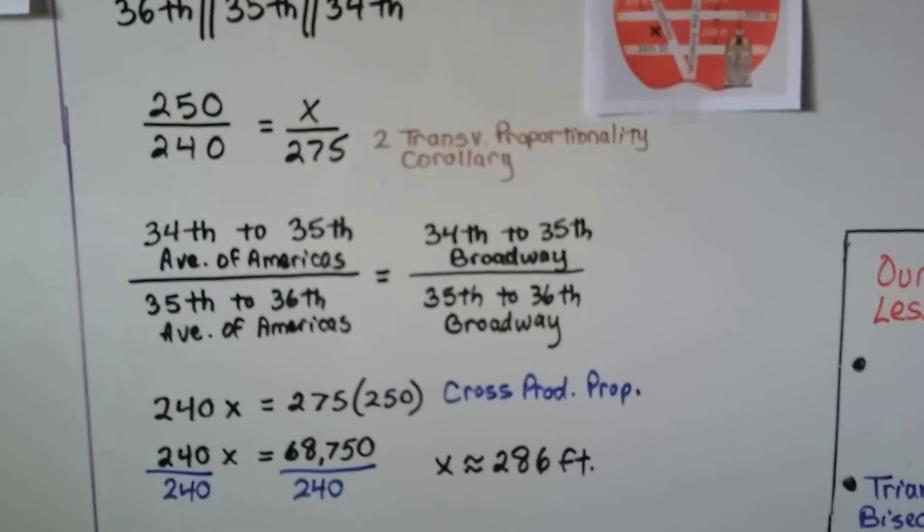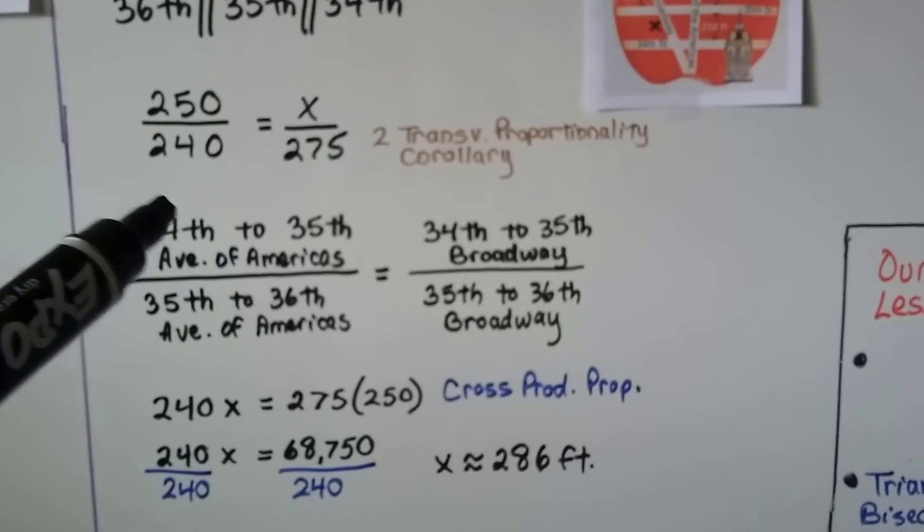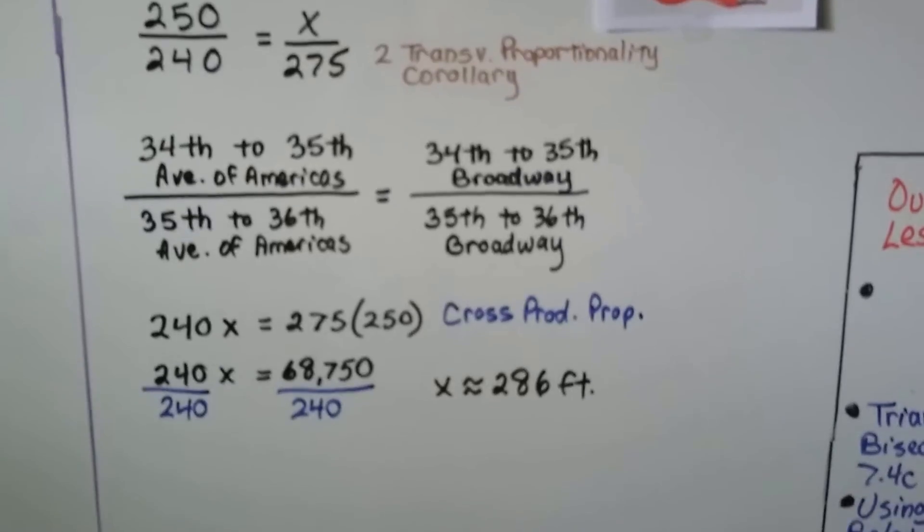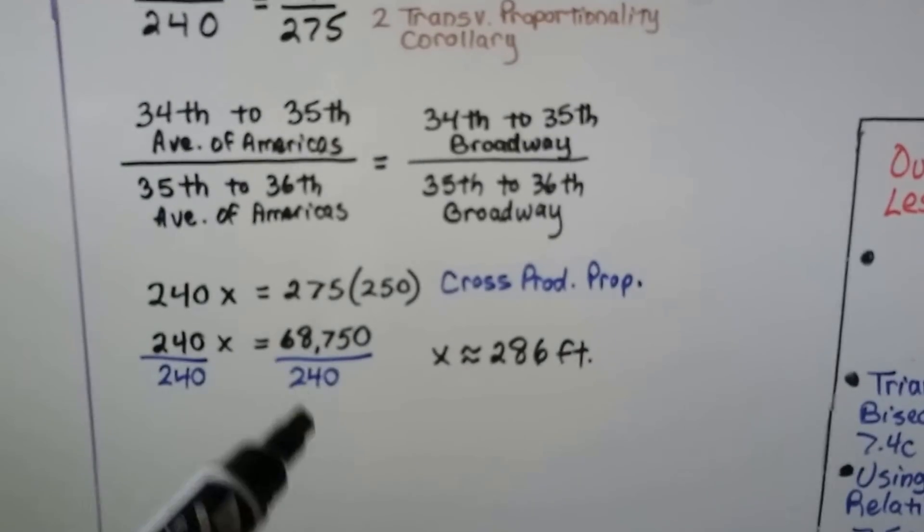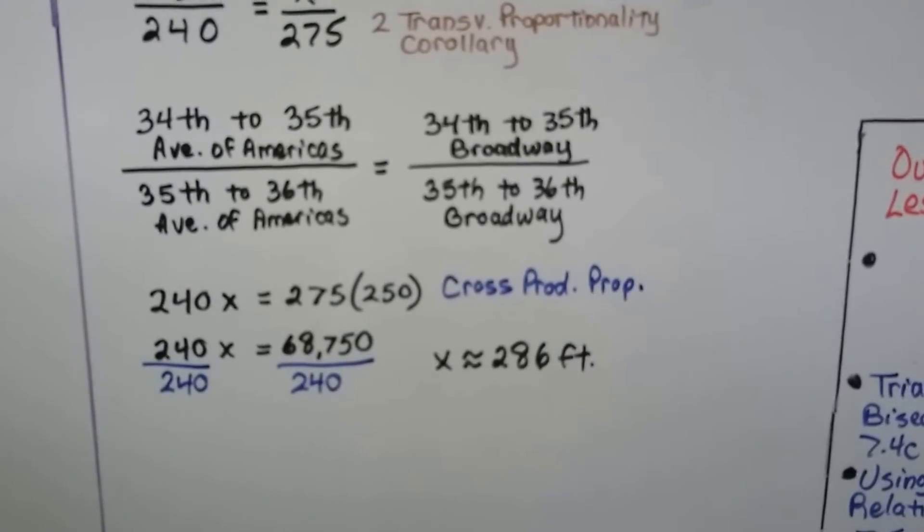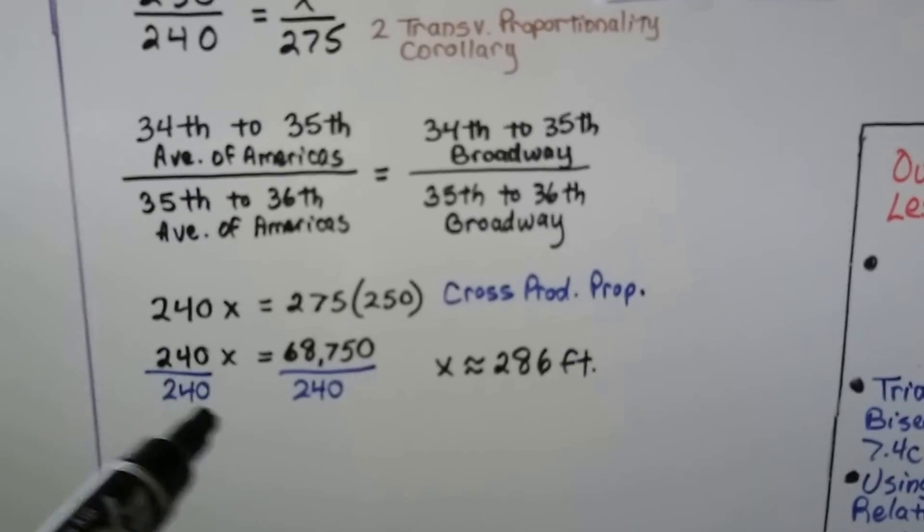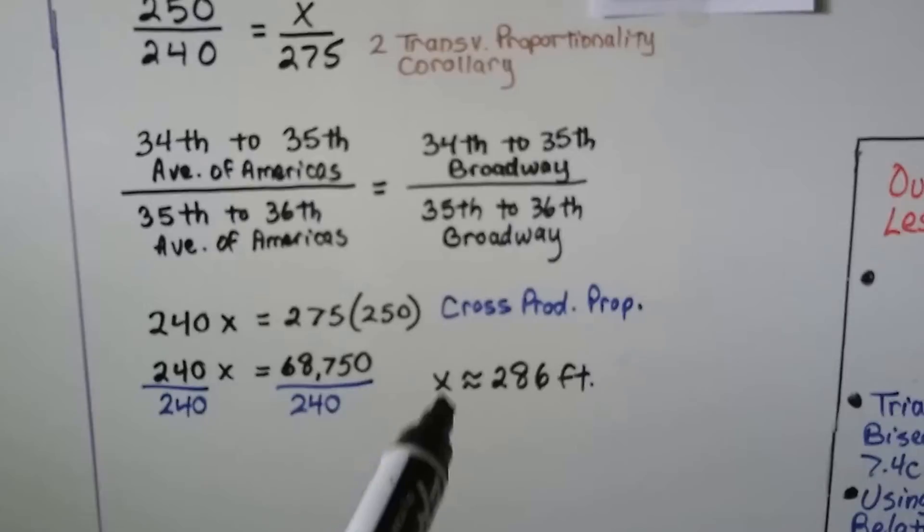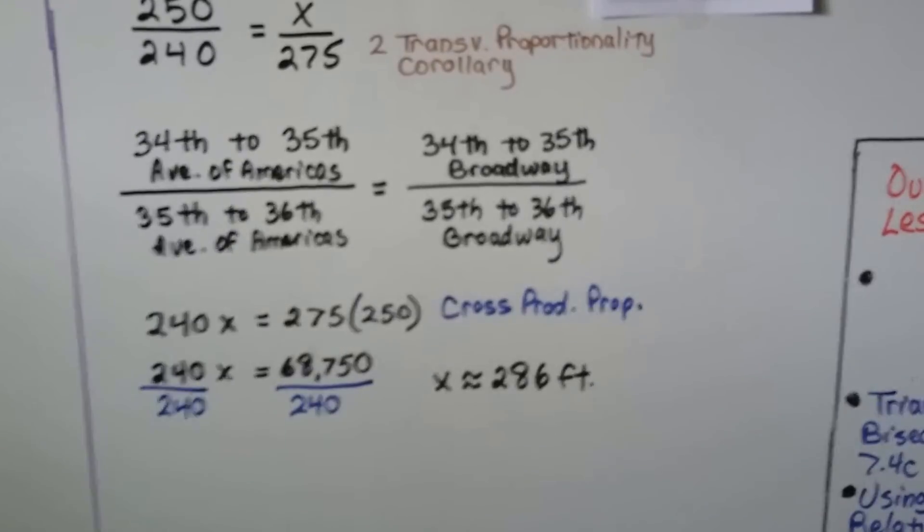So we've got this, we can do cross products. We can do 240x is equal to 275 times 250, and 275 times 250 is 68,750. We can divide both sides by the 240, and we find out that the missing measure is approximately 286 feet.